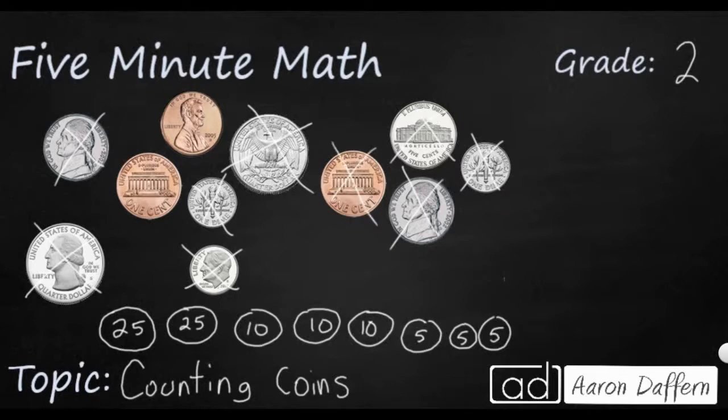And so when we're skip counting to count our money, we're always going to start with our largest values first and then move down to our smallest. So I'm just going to write the counting value of each as it's added to everything that's been there before. So 25 plus another 25 is 50. It's 25 and 25 is 50. And another 10 is 60. Add another 10 is 70. Add another 10 is 80.